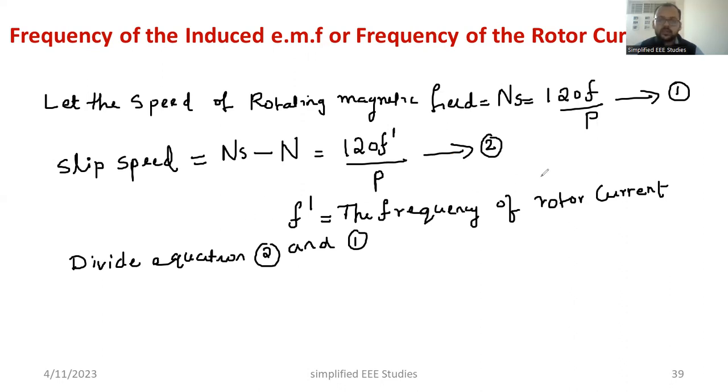Can you divide this? Yes, of course we can do that. Equation number 2 is, so first we will divide LHS part. That is Ns minus N divided by Ns. Now, we look at the RHS part. What is the RHS part? 120 F dash by P whole divided by 120 F by P. This implies Ns minus N divided by Ns. Are you recalling this? Ns minus N is nothing but slip speed divided by synchronous speed. What is the meaning of this? It is nothing but slip. We already discussed slip is nothing but the ratio of slip speed to the synchronous speed. That is called slip. So we can call it as S. S is known as slip.